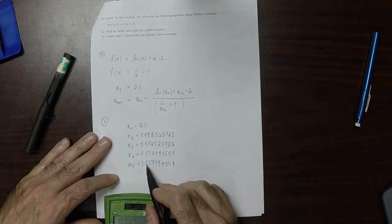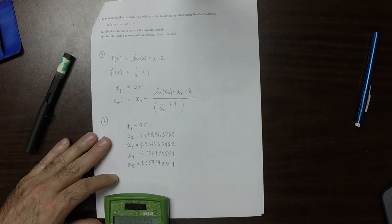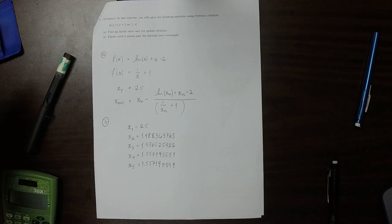So the first four places have converged, 5, 5, 7, 1. That's the answer to part 2.